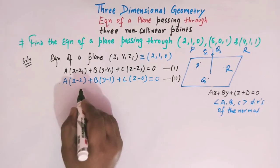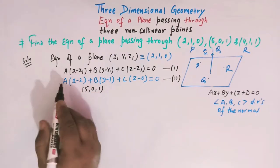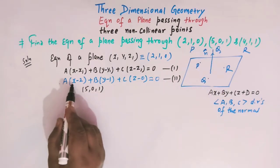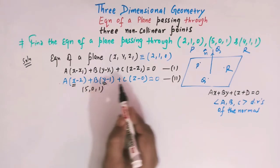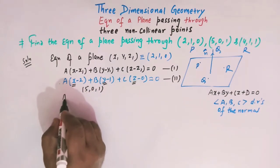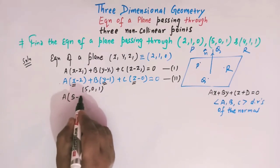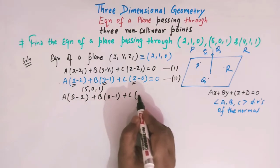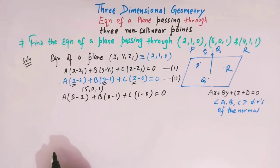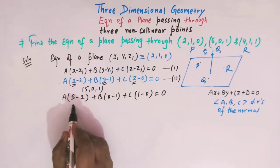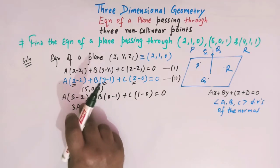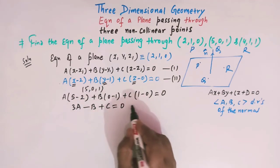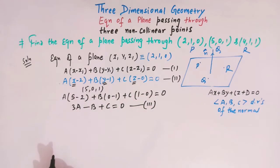Substituting x = 5, y = 0, z = 1 into equation (2): a(5 − 2) + b(0 − 1) + c(1 − 0) = 0, which simplifies to 3a − b + c = 0. This is equation (3).